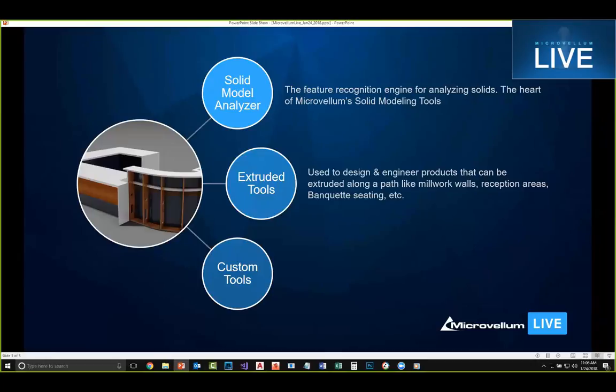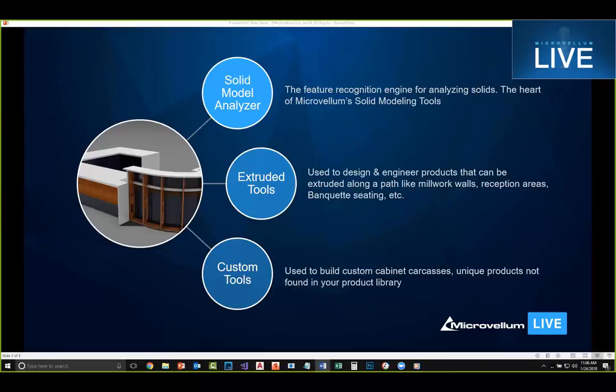Next we have our custom tools. When we announced the first release, we called it our unique product builder, but that's changed and we now refer to this as our custom tools. This is an area in the tool palette that allows you to build custom cabinet carcasses or unique products — things that are not found in your library. That's basically what makes up our solid modeling tools right now.